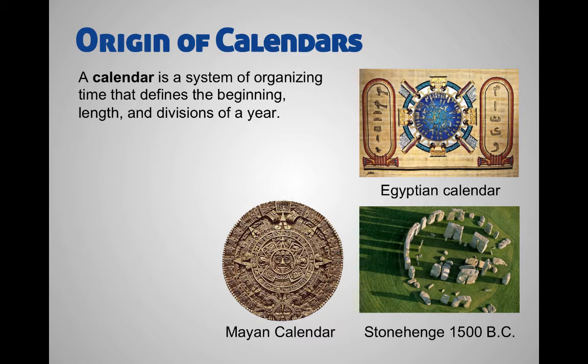Thinking about ancient civilizations — why was it important for them to keep track of revolutions, years, months, and days? We have to talk a little bit about calendars, which are just a way of organizing time. A calendar defines the beginning, the length, and the divisions of a year. If you look at these three ancient calendars here — the Mayan calendar, Egyptian calendar, and Stonehenge — different positions on them correspond to different times of the year, whether it's the solstices, equinoxes, or other events.